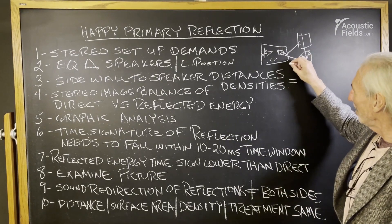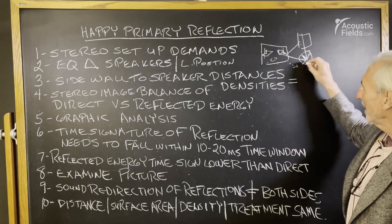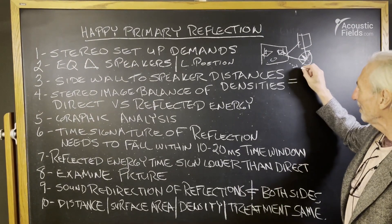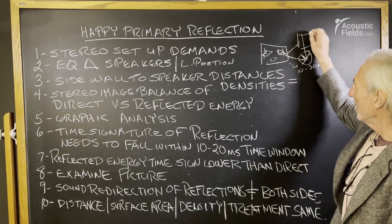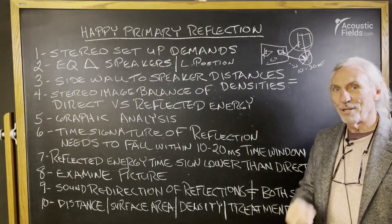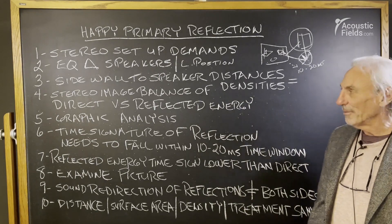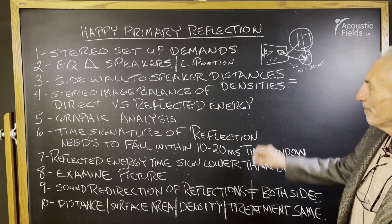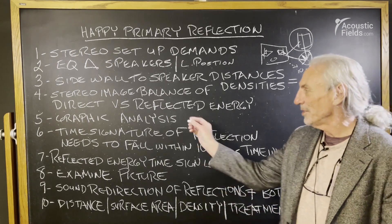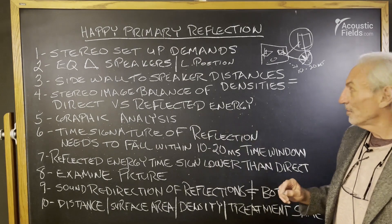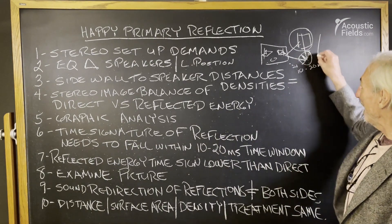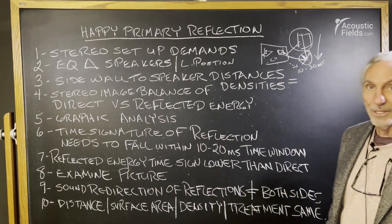We've got to slow the reflected energy down so the direct energy gets there first. There's a 10 to 20 millisecond time window that we have to work with in order to get that strong center image. And I'll show you a really great way to do that in a future video. You can see in this graphic we've got primary, secondary, and tertiary reflections — three major reflections that we have to manage the time signature on in order to get that balance between direct and reflected energy.